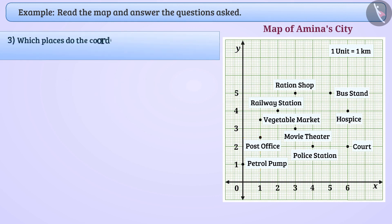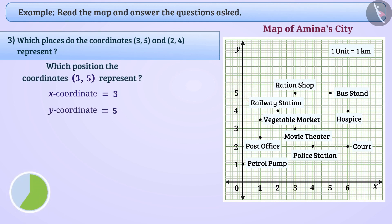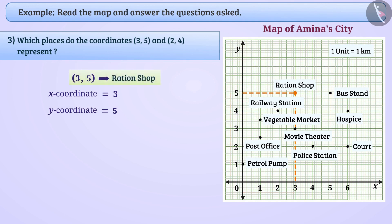Which places do coordinates (3, 5) and (2, 4) represent? For coordinates (3, 5), the x-coordinate 3 tells us to move 3 units along the x-axis, and y-coordinate 5 tells us to move 5 km along the y-axis. In this way, coordinates (3, 5) represent the location of a ration shop. Similarly, coordinates (2, 4) — where 2 is the x-coordinate and 4 is the y-coordinate — represent the railway station.